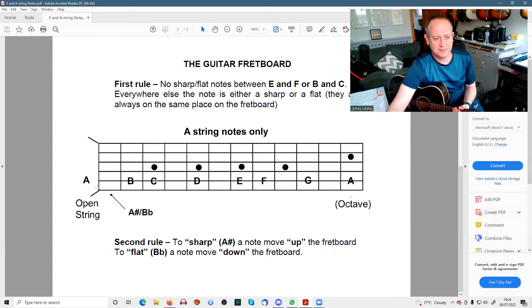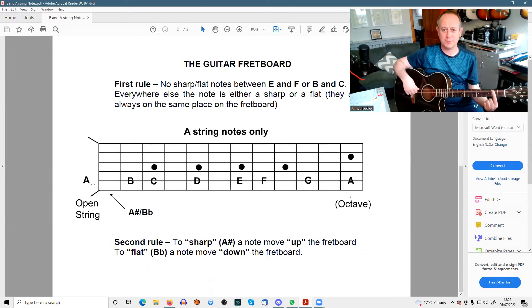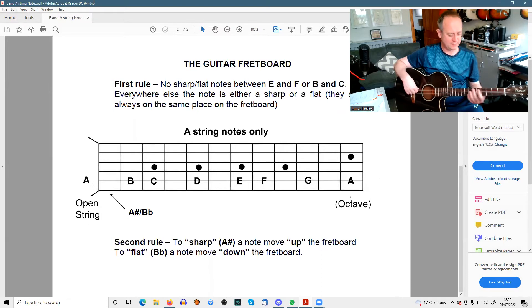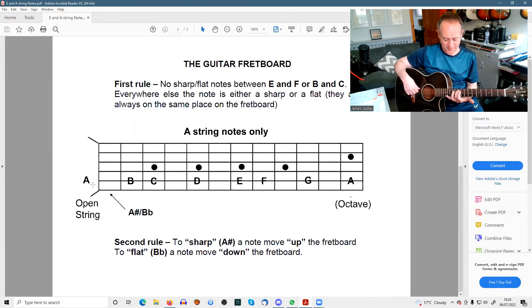So on the A string, the open string is A, then B, then C is a half step up one fret. Up two frets is D, up two is E, half step again, E to F. You can even hear it. Up two frets, G, and then we hit the octave, the A on the 12th.